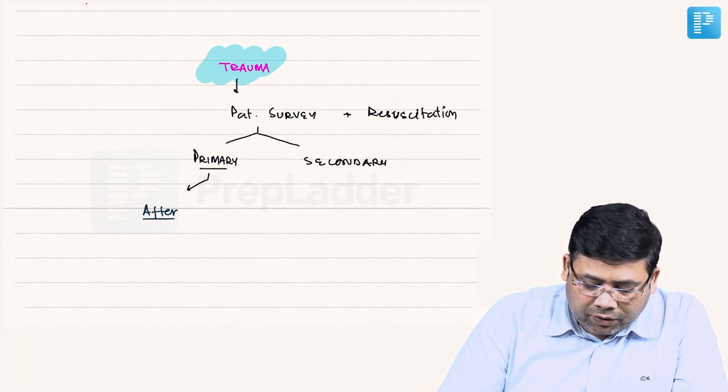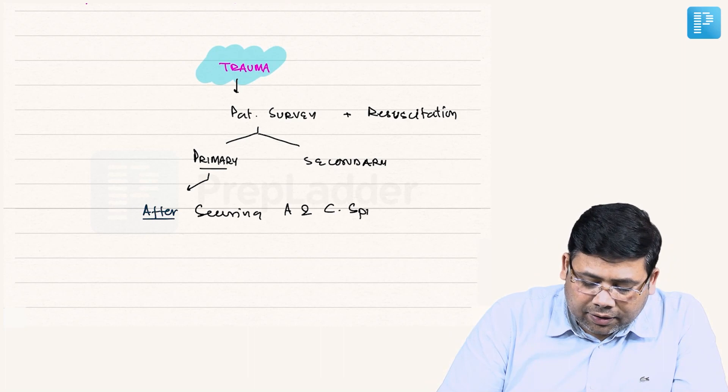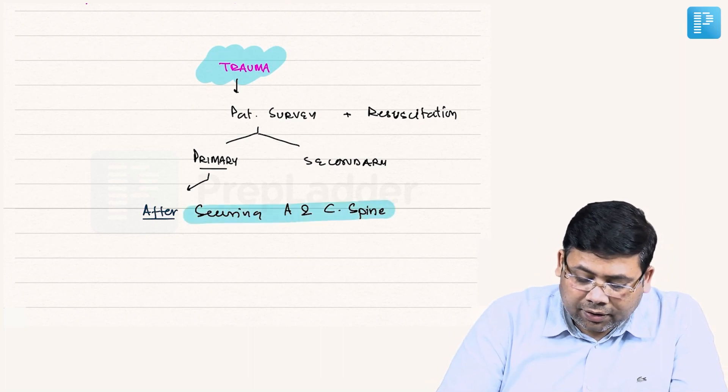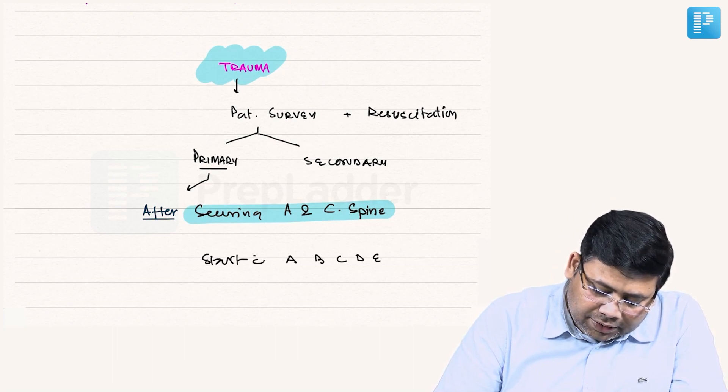According to this concept, we follow the concept of, after securing airway and cervical spine, we start with A, B, C, D, E.